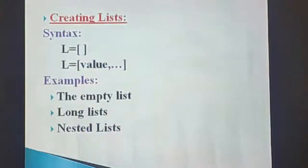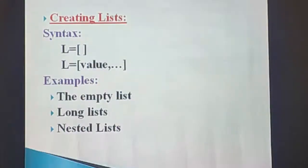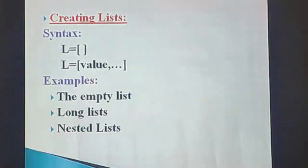First one is creating a list. Before I explain about creating a list, we must know what is meant by a list. A list is a container used to store a sequence of values of any type. Lists are a mutable type, meaning we can change the elements in a list in place — that is, in memory.